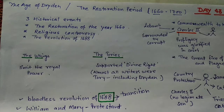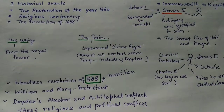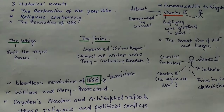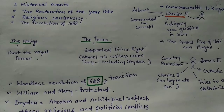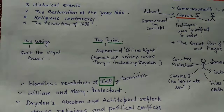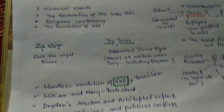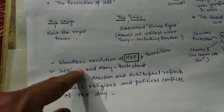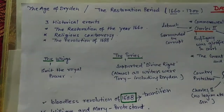The Restoration Period covers the years 1660 to 1700. The stories of this period revolve around Charles II and James II. There are a few terms like the Whigs you need to know, and also the Bloodless Revolution of 1688 — keep on watching.